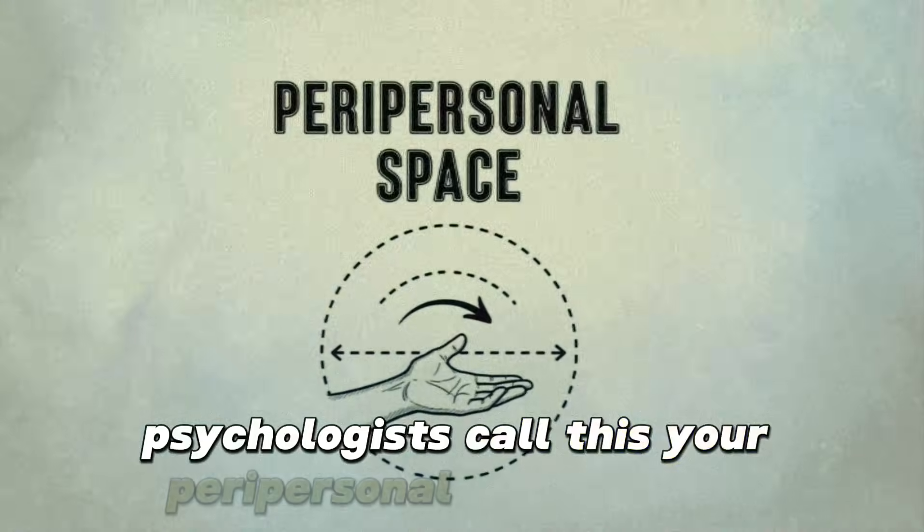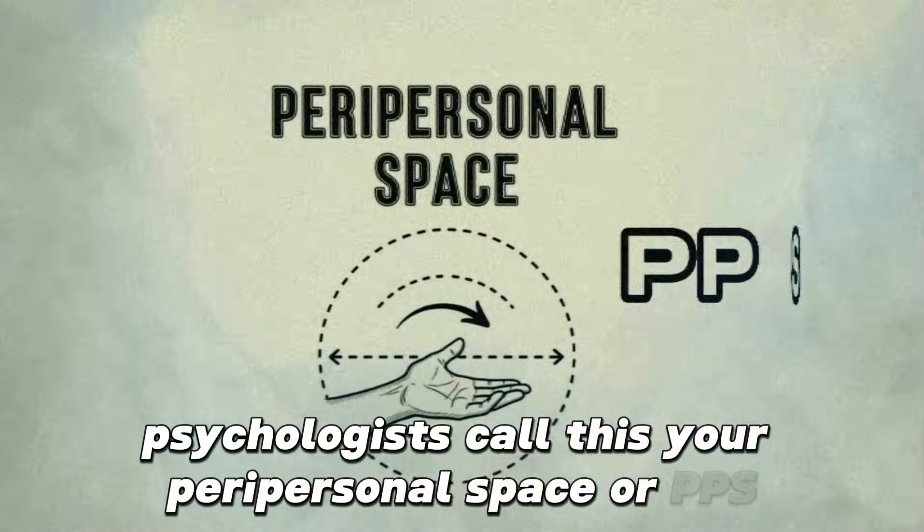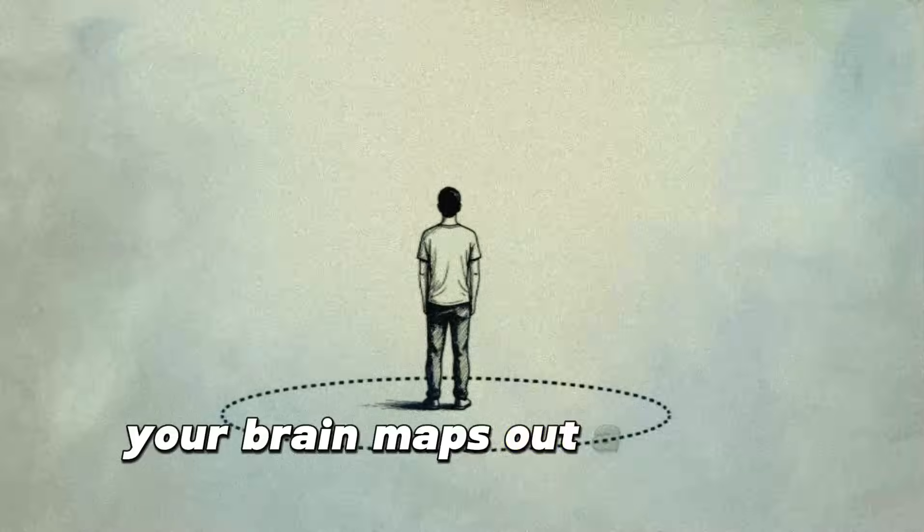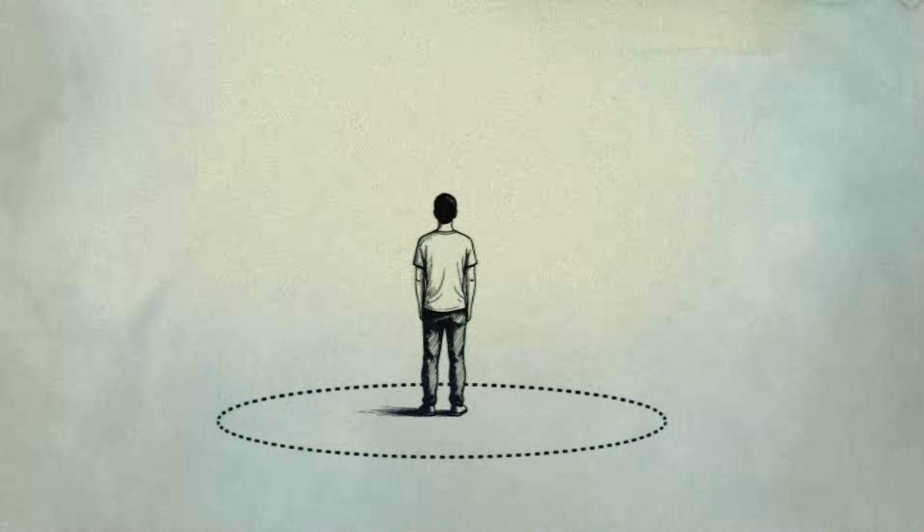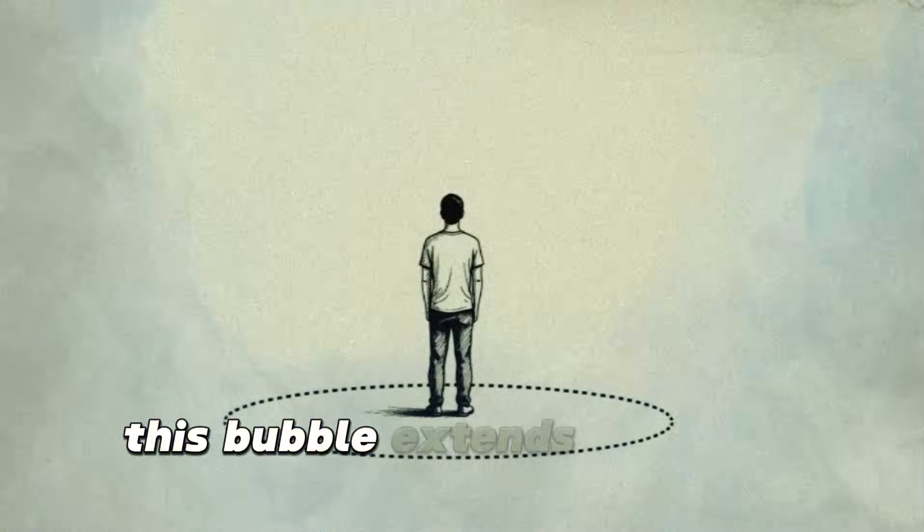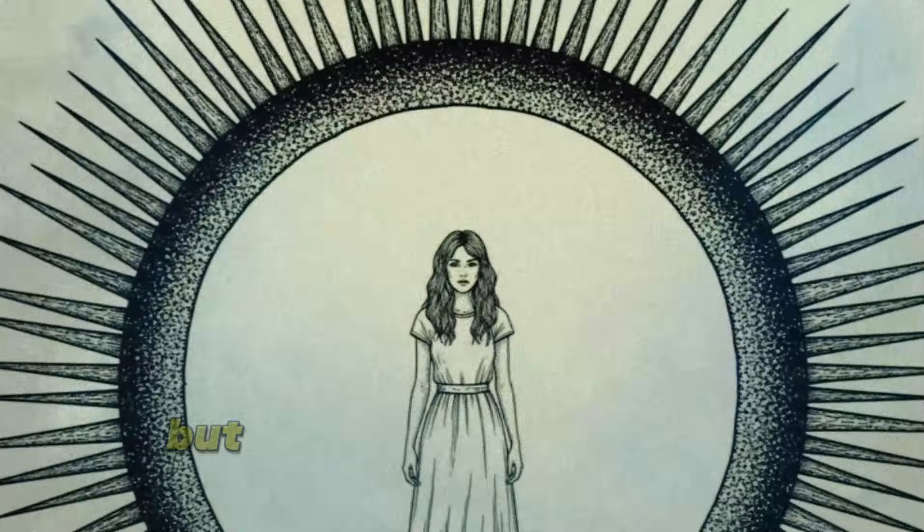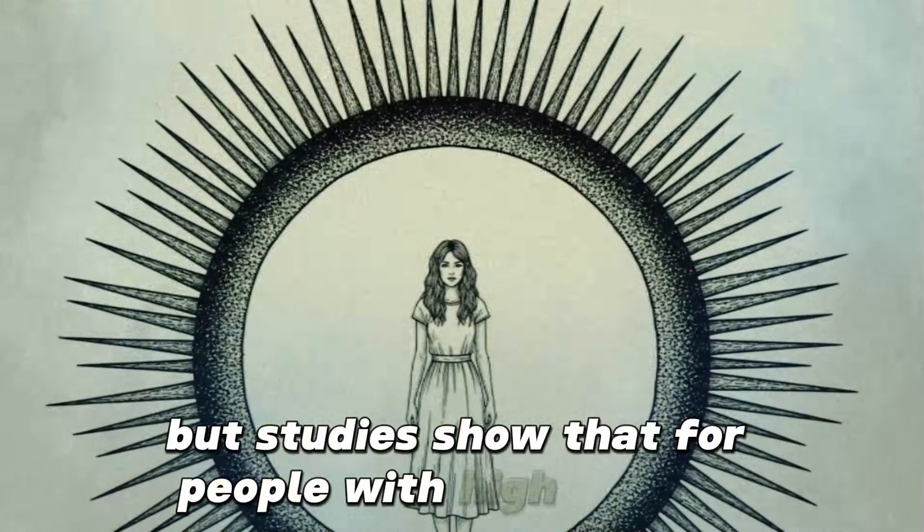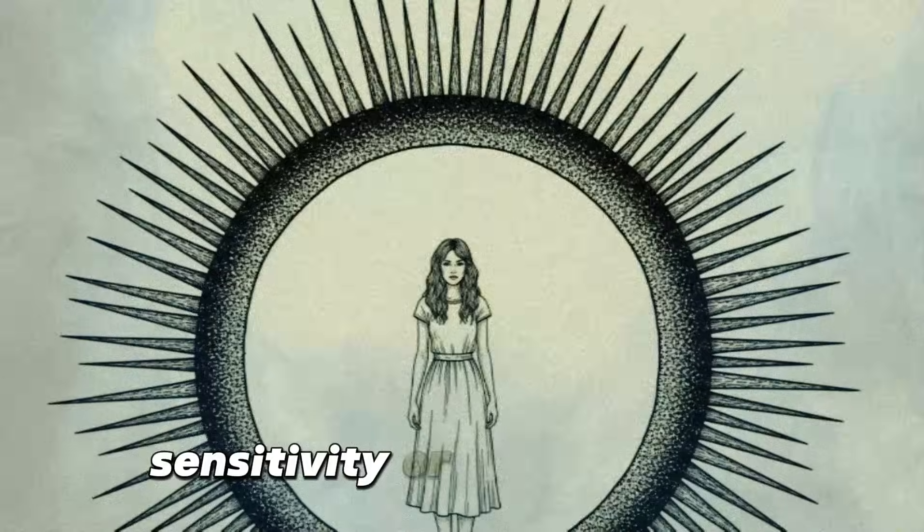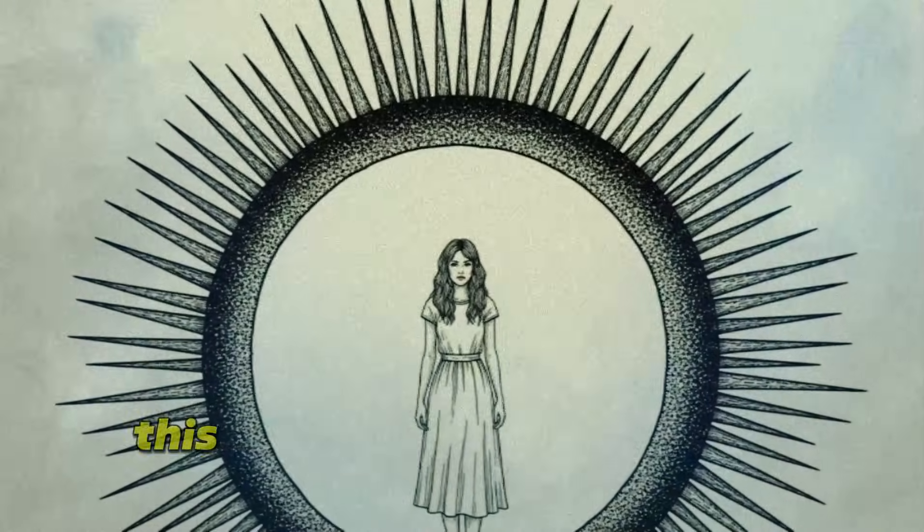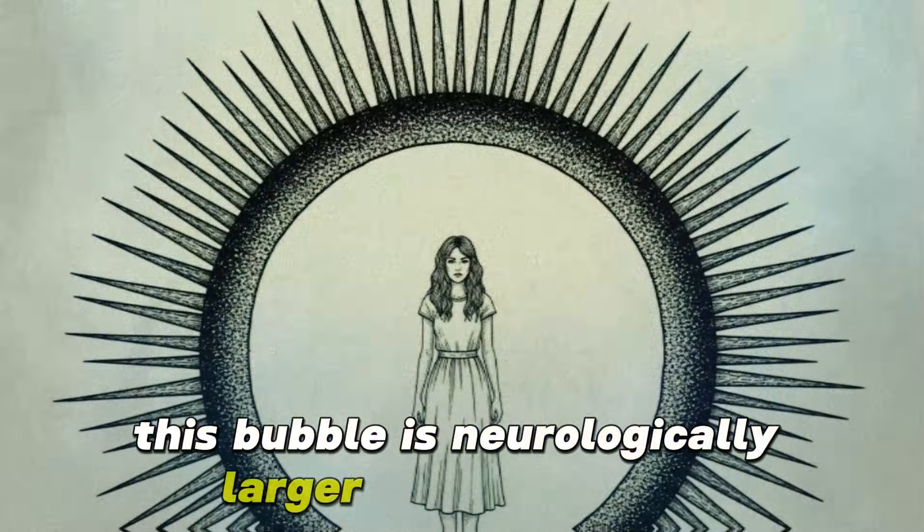Psychologists call this your peripersonal space, or PPS. Your brain maps out a safety bubble around your body. For most people, this bubble extends about an arm's length. But studies show that for people with high anxiety sensitivity or high empathy, this bubble is neurologically larger and more rigid.